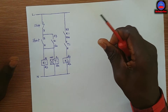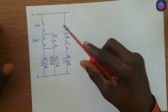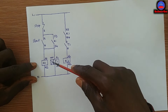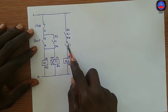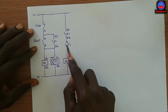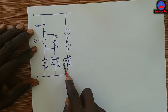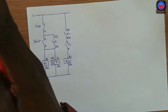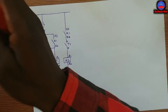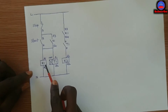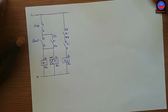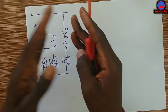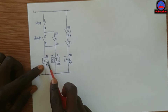When the timer energizes it also starts counting. Let's say we set the timer at six seconds or ten seconds — whatever preset time you give it. After that preset time, this normally open contact on the timer will close, and when it closes it energizes K2, the Contactor 2 or Motor 2. So in this circuit the motors always operate in sequence: Contactor 1 must be in operation for some time before Contactor 2 energizes.